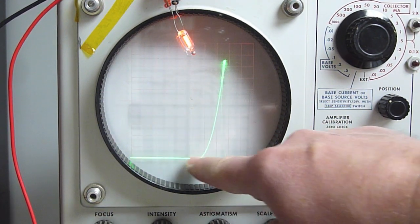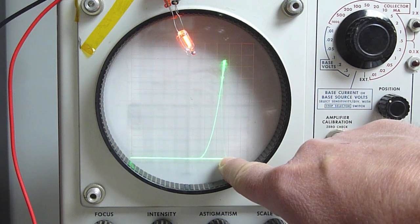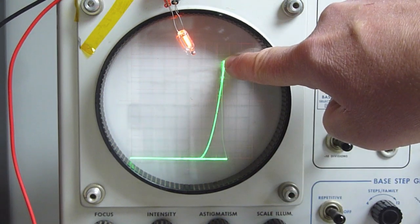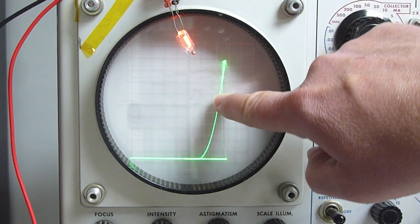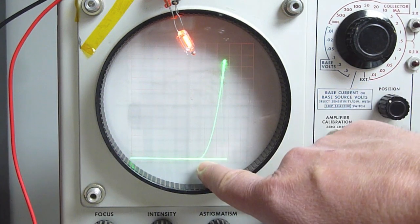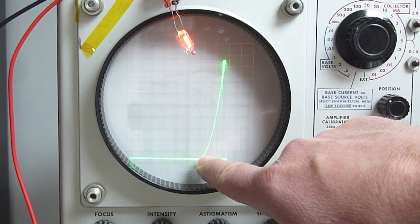Nothing happens until we get to about 75 or 80 volts. Then the bulb triggers. On the way down when we're sweeping the voltage, because the gas is already ionized, the bulb stays on down to about 55 to 58 volts.